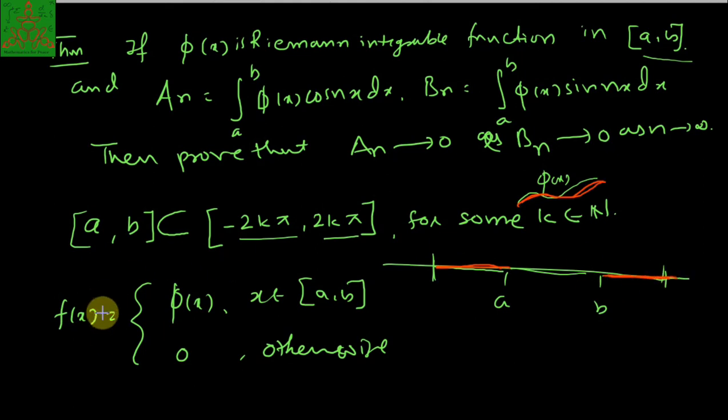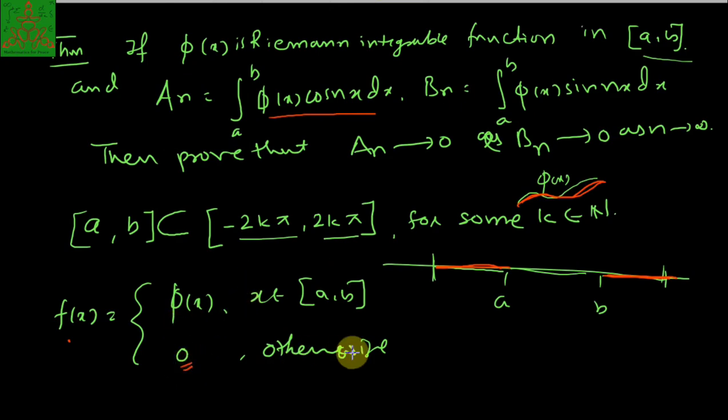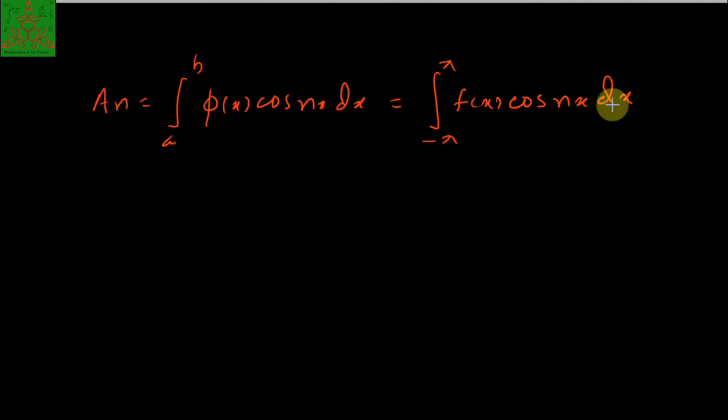Now what will be this quantity, as per the previous discussion? I can write Aₙ, which is the integral from a to b of φ(x) cos(nx) dx. This we can write as the integral from -π to π of f(x) cos(nx) dx, due to f being 0 outside. In the interval, the integration is there, but outside the function is 0, so I am adding this portion. We do not make any change to the integration.